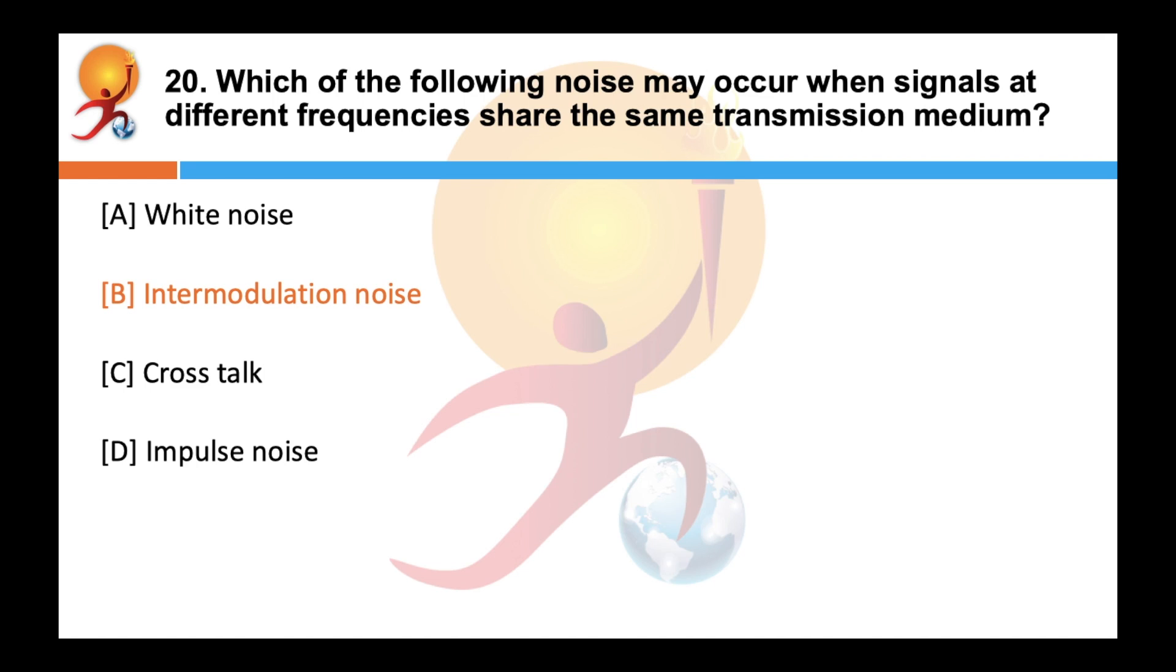What is white noise? Noise containing many frequencies with equal intensities. Cross-talk refers to unwanted transfer of signals between communication channels, generally caused by electric or magnetic fields of one telecommunication signal affecting another signal.